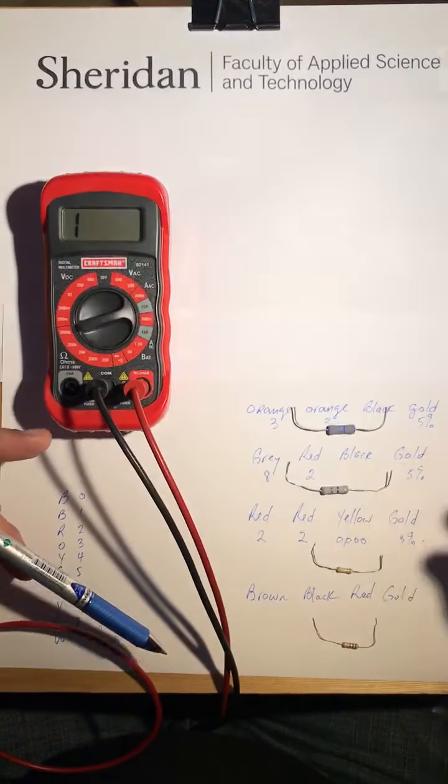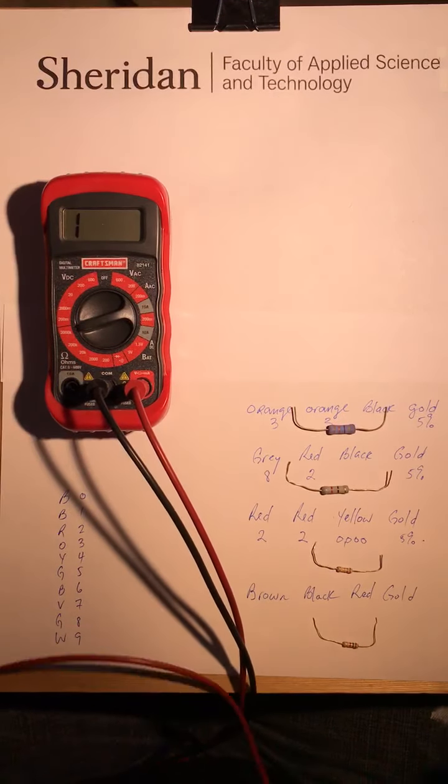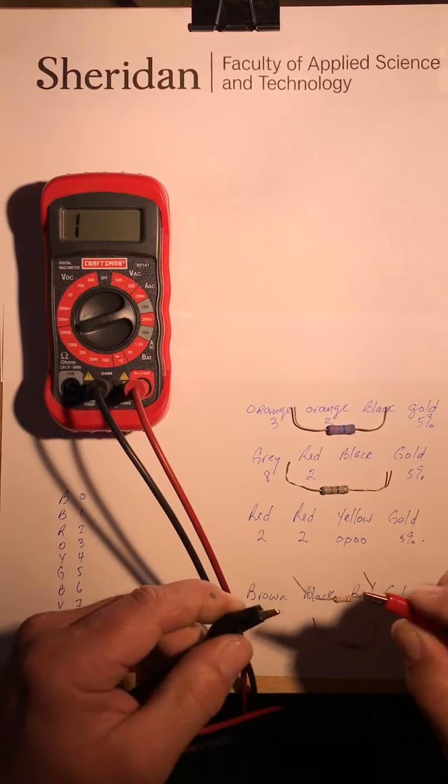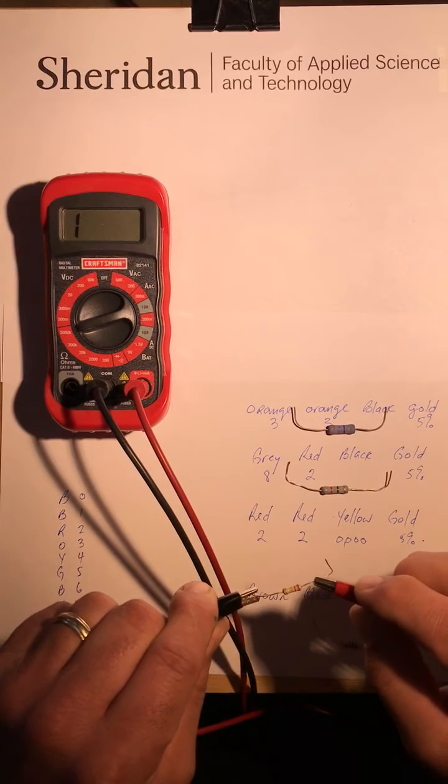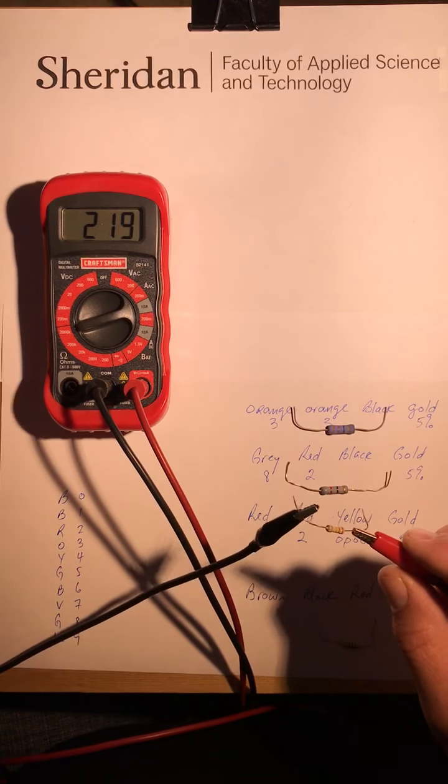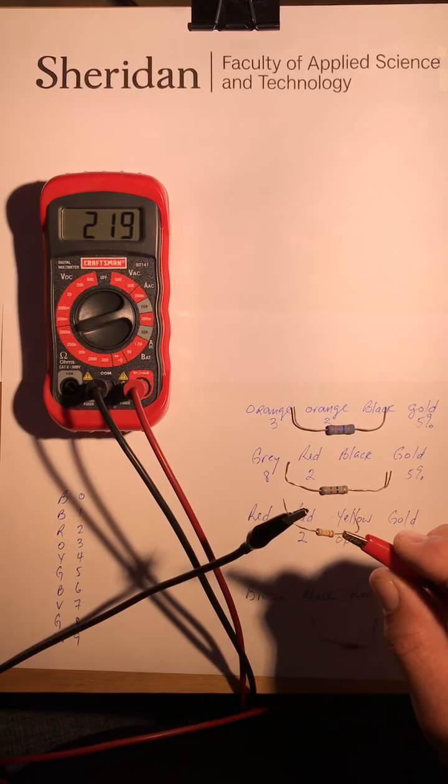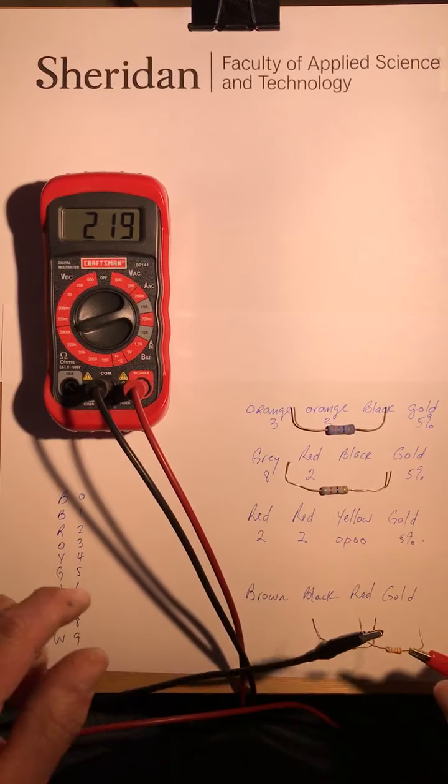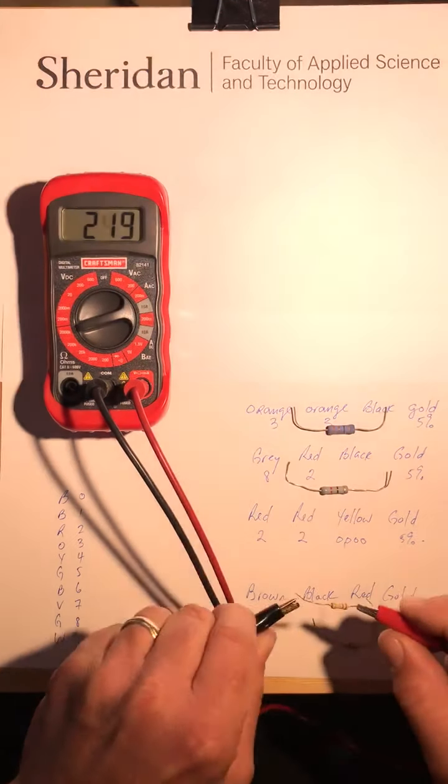Now I'm gonna see what I got here, so I'll put this on here and here, and I've got 219,000 ohms. So 220,000 ohms plus or minus five percent - that's right.